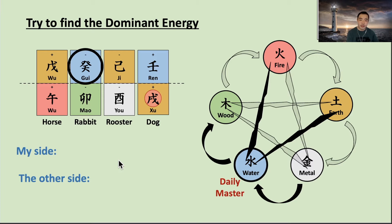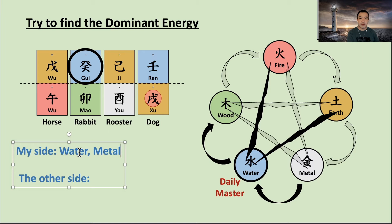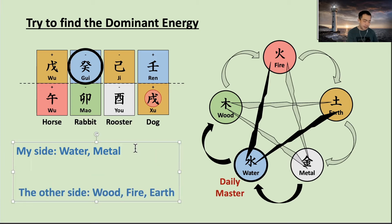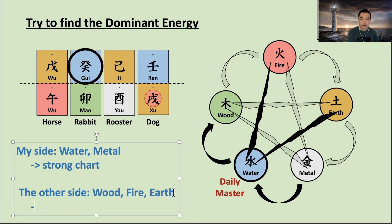So where to start? What elements are on my side? Since the daily master is water, water is on my side. And the mother of water — the metal — is also on my side. Which elements are on the other side? The other three: wood, fire, and earth. So if my side is relatively stronger than the other side, this chart will be a strong chart. And if the other side is relatively stronger, this chart will be a weak chart.